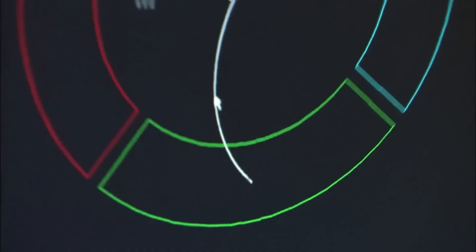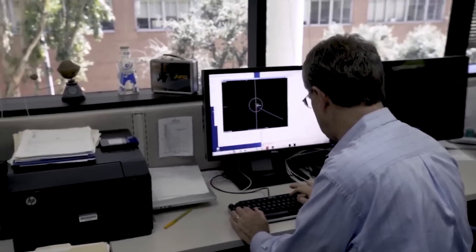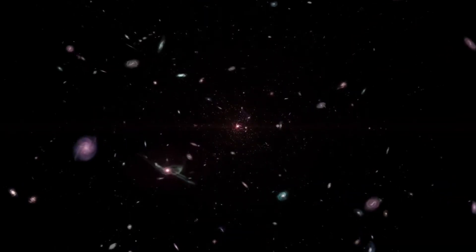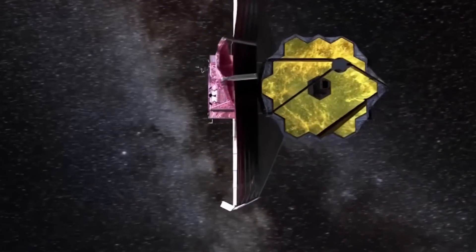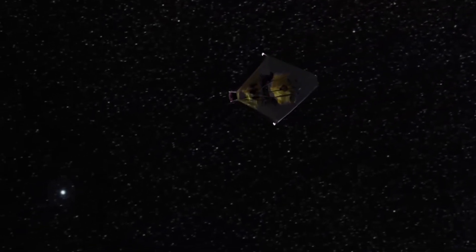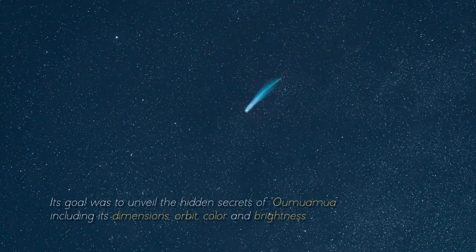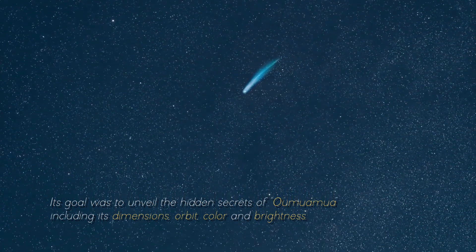When it comes to maximizing time and unraveling the enigmas of the universe, NASA stands out as a consummate master in its tireless quest to shed light on the mysterious features of Oumuamua. The arrival of the James Webb telescope came on the scene as a formidable astronomical instrument, ready to embark on a journey of precise measurements and research with unwavering determination. Its goal was to unveil the hidden secrets of Oumuamua, including its dimensions, orbit, color, and brightness.